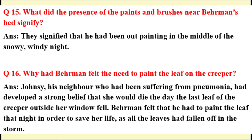Question 15: What did the presence of paints and brushes near Behrman's bed signify? Answer: They signified that he had been out painting in the middle of the snowy, windy night. Question 16: Why had Behrman felt the need to paint the leaf on the creeper? Answer: Johnsy, his neighbor suffering from pneumonia, had developed a strong belief that she would die the day the last leaf fell. Behrman felt he had to paint the leaf that night to save her life, as all the leaves had fallen off in the storm.